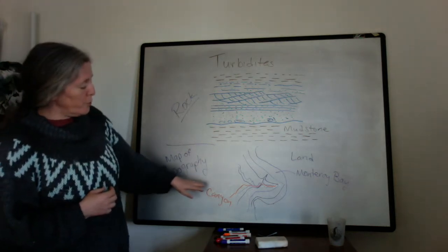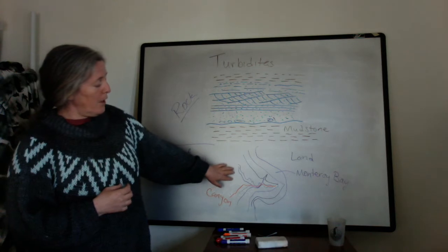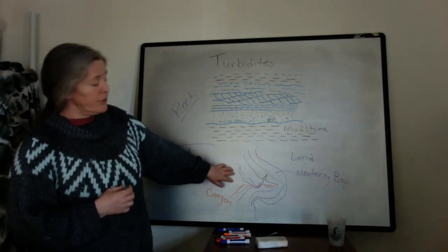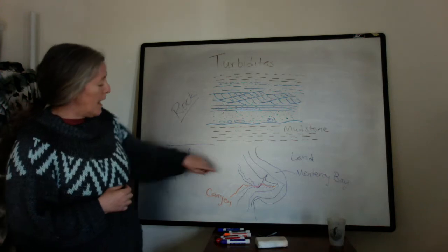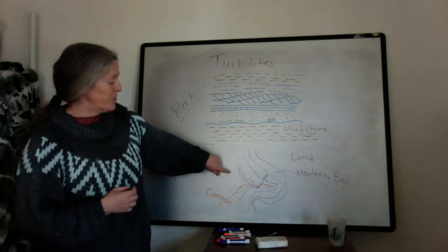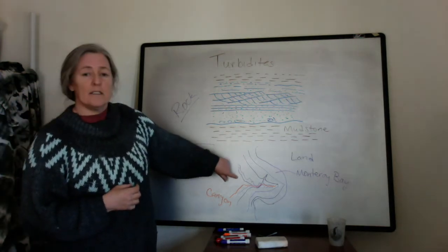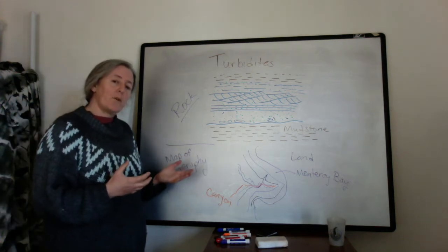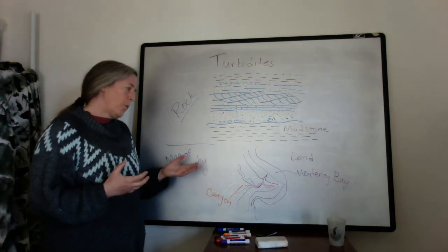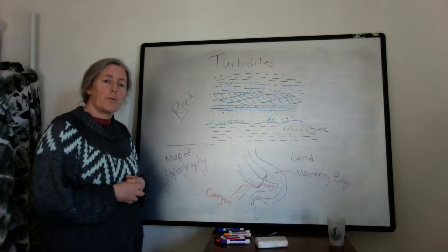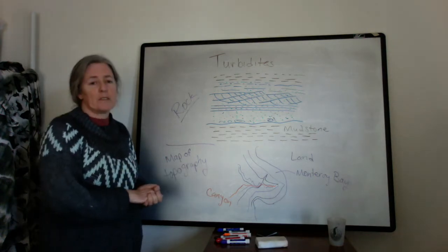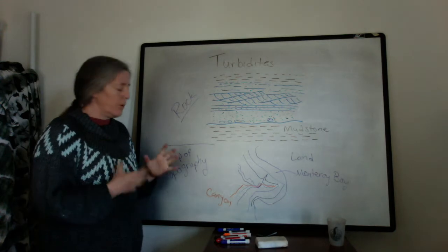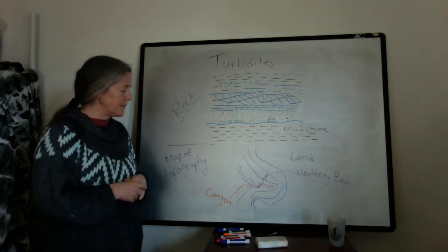Oceanographers were mapping the bathymetry of the seafloor and discovering that there were these giant canyons on the seafloor. They were trying to understand what processes could actually form those canyons — suggesting that maybe when sea level was low, rivers caused them, or there were all sorts of different processes.